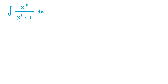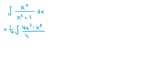If we use the substitution u equals x to the 4, then we would need to have an x cubed term in the numerator, since the derivative of x to the 4 is 4x cubed. We don't have that, since the numerator is x to the 11. But notice how we can rewrite the entire expression as 1 fourth times the integral of 4x cubed times x to the 8, all over x to the 8 plus 1 dx.